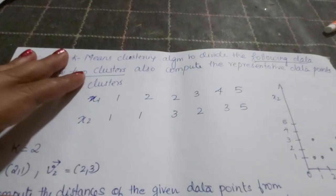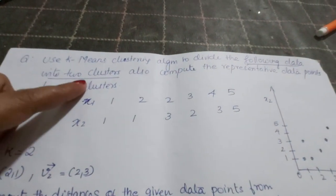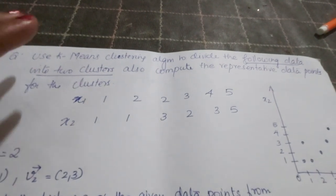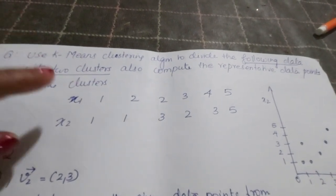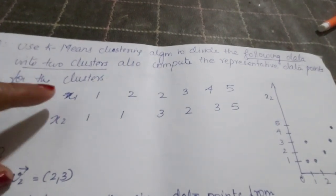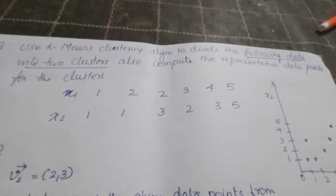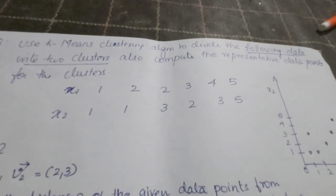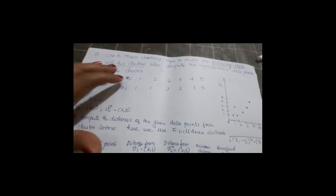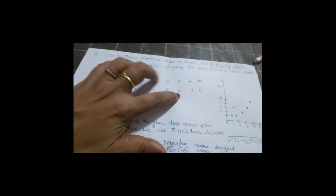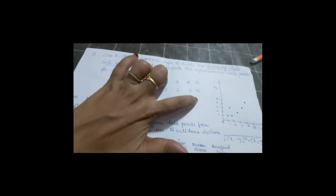Use the k-means clustering algorithm to divide the following data into two clusters, so k is equal to 2. You also have to compute the representative data points for the clusters. The given data has coordinates x1 and x2 with values: (1,1), (2,1), (2,3), (3,2), (4,3), (5,5).